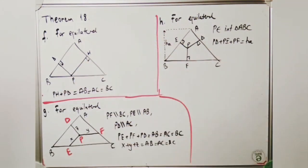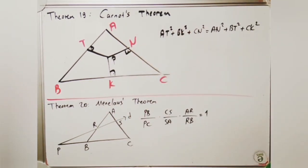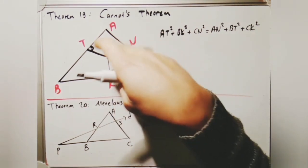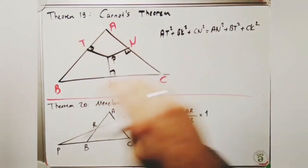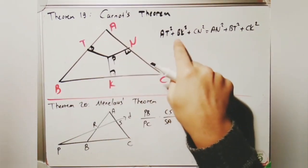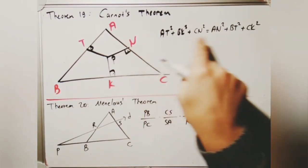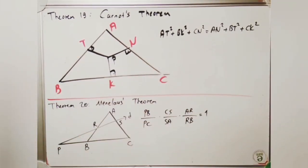Theorem 19 is Carnot's theorem. In triangle ABC, P is an interior point, and PN, PK, PT are perpendicular to sides AC, BC, and AB respectively. Then: AT² + BK² + CN² = AN² + BT² + CK².